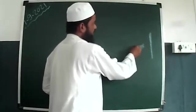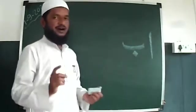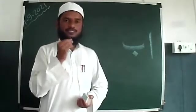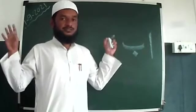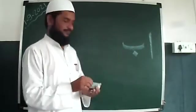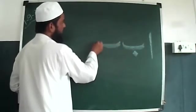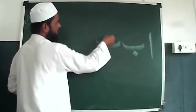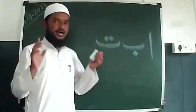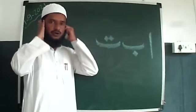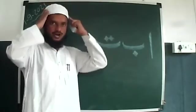Tiny board below the line, one dot: Ba. Ba for Bismillah, and Ba for Batah (duck). Tiny board above the line, two dots: Ta. Ta for Takbir, and Ta for Taaj (crown).